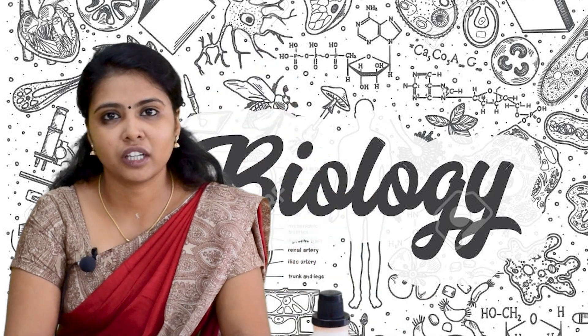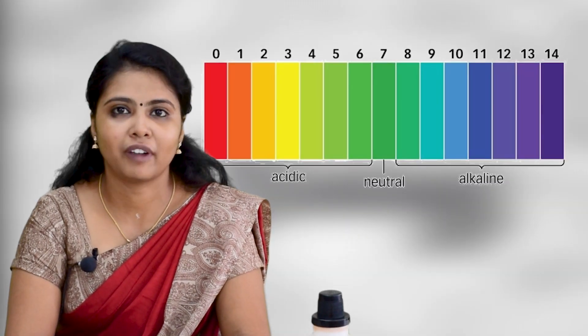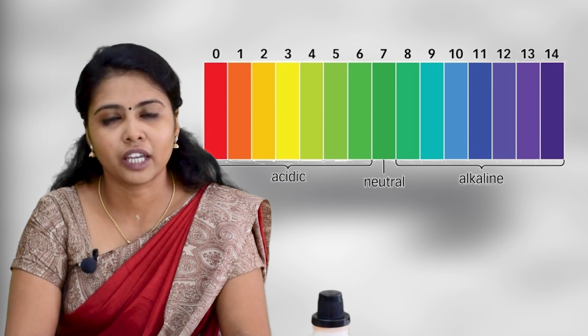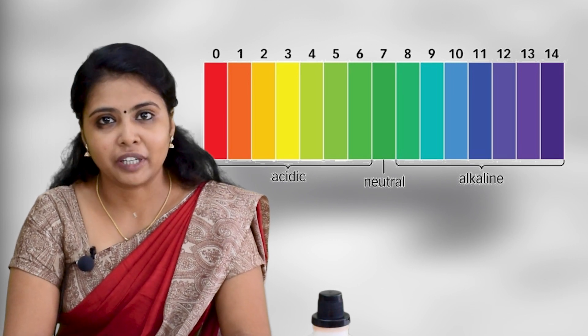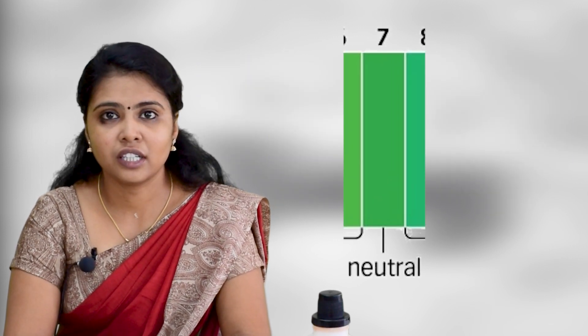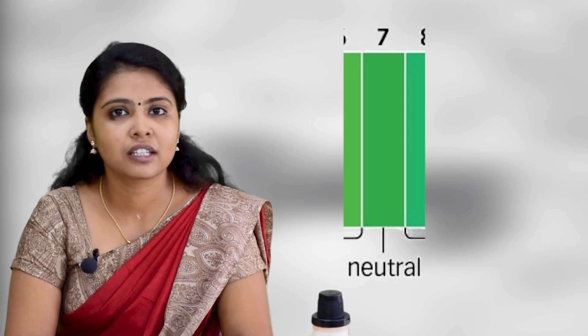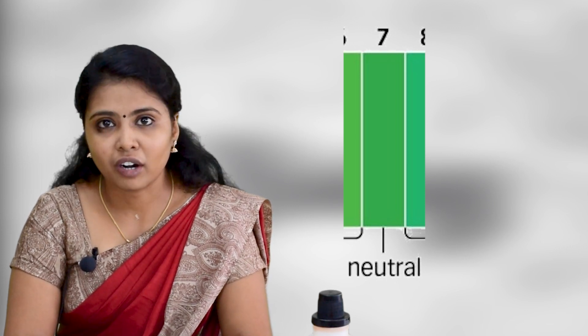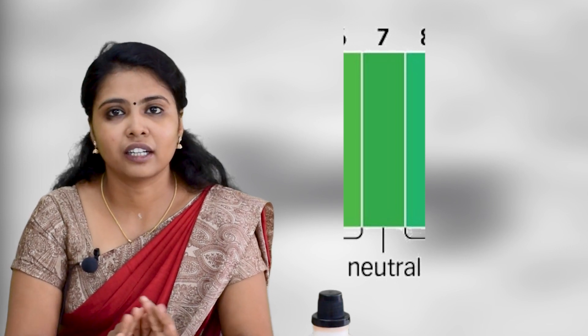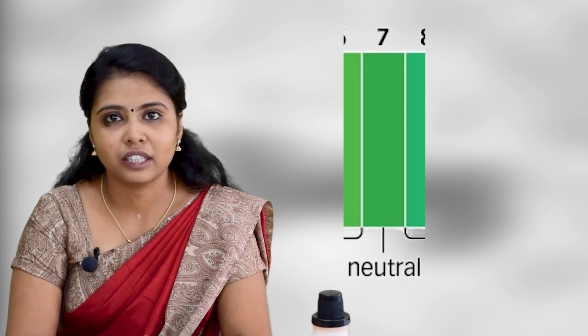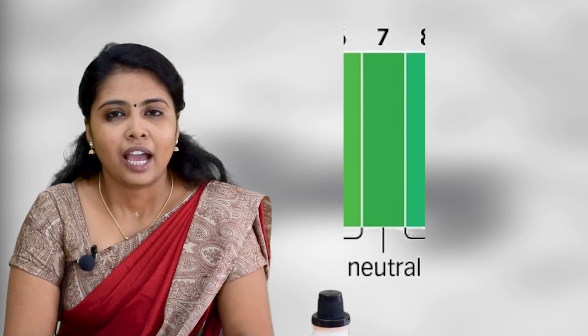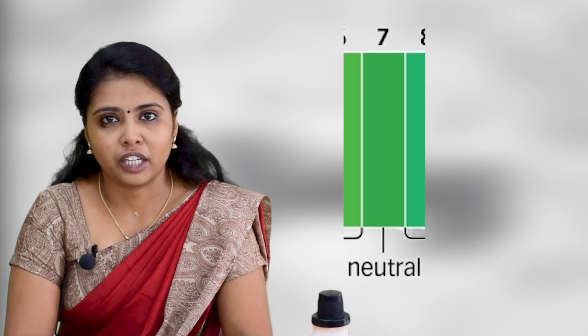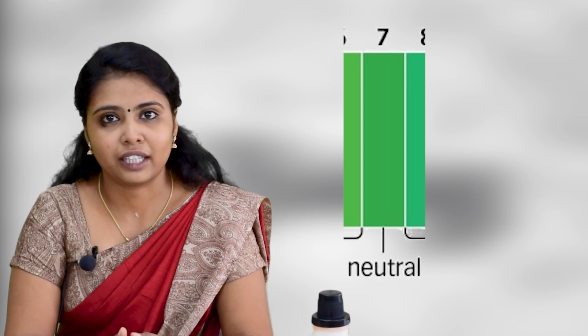Hi children, today we are going to do an experiment regarding the pH. What is pH? pH is the potential of hydrogen in a solution. We know the neutral pH is 7 — that means the pH is not acidic and not basic; that condition is what we call neutral, and that pH is 7.